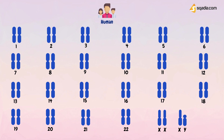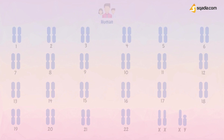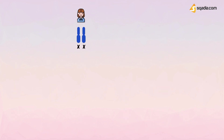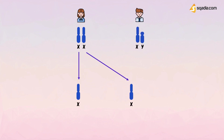All egg cells produced by a woman contain one X chromosome. If a sperm carrying an X chromosome fertilizes the egg, the child will be a girl. But if a sperm carrying a Y chromosome fertilizes the egg, the child will be a boy.